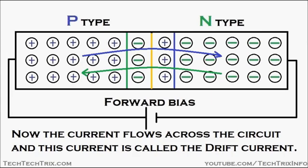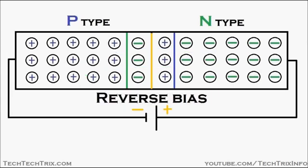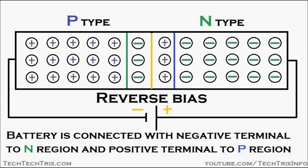Now the current starts to flow across the circuit, and this current is called the drift current. Now let's see reverse bias. For reverse bias in a PN junction semiconductor, the negative terminal of the battery is connected towards the P-type semiconductor.